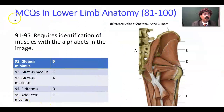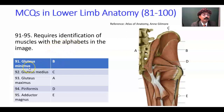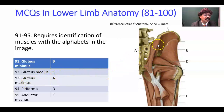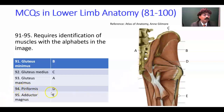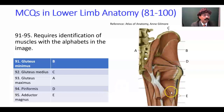Question number 91 to 95 regards identification of muscles with the alphabets in the image. Question 91: B is the gluteus minimus. Question 92: gluteus medius is the muscle here. Question 93: C — gluteus maximus is here, the muscle has been cut. Question 94: this is the piriformis muscle. Question 95: adductor magnus is this big muscle.